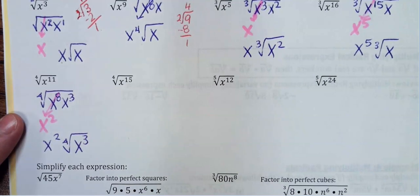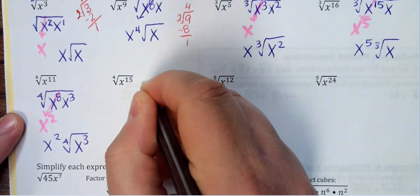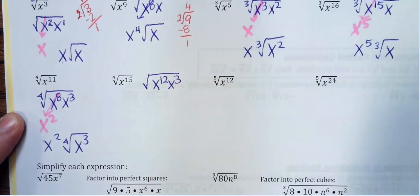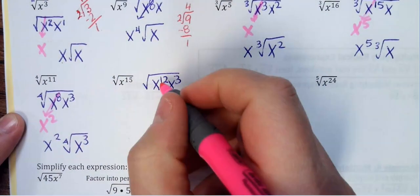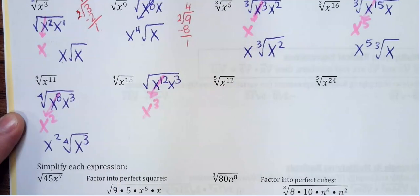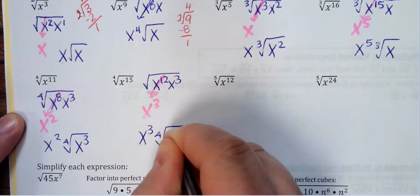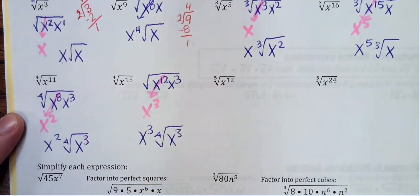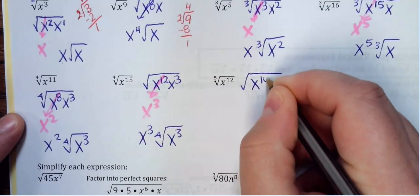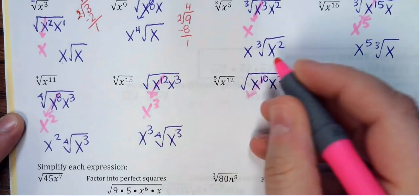For the fourth root of x¹⁵: 15 is not divisible by 4, so I use 12 and 3. Dividing 12 by 4 gives x³, so this is x³·∜(x³). For a fifth root, you want your exponent divisible by 5. For x¹², I use x¹⁰·x². Dividing 10 by 5 gives x², so this is x²·∜(x²).